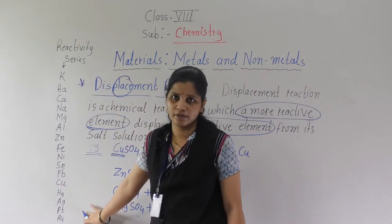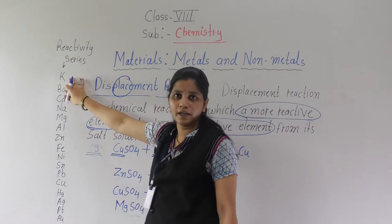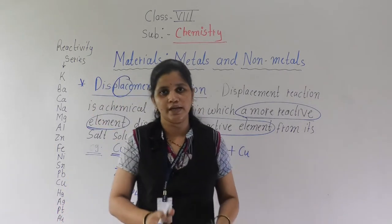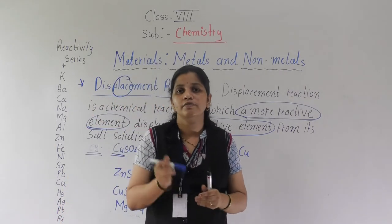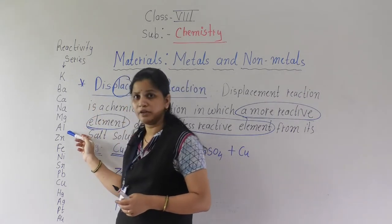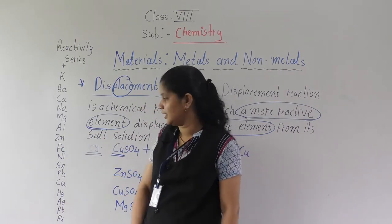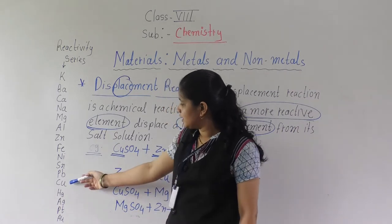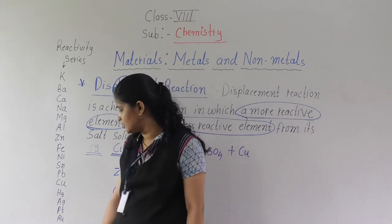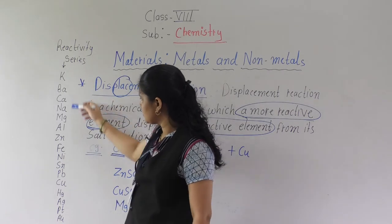To understand this reaction, the reactivity series is very important. In the reactivity series, from more reactive to less reactive, the elements are: potassium (K), lithium, calcium, sodium, magnesium, aluminium, zinc, iron, nickel, then lead, copper, mercury (Hg), silver, platinum, and gold. These upper elements are more reactive and the lower ones are less reactive.